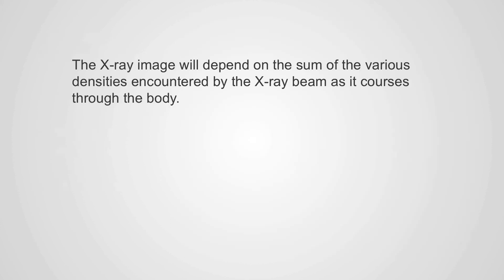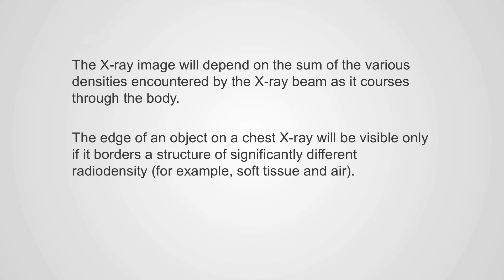So to recap, the x-ray image will depend on the sum of the various densities encountered by the x-ray beam on its course through the body. Similarly, the edge of an object on a chest x-ray will be visible only if it borders a structure of significantly different radiodensity, for example soft tissue and air.